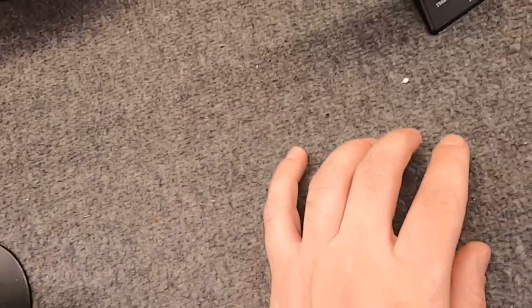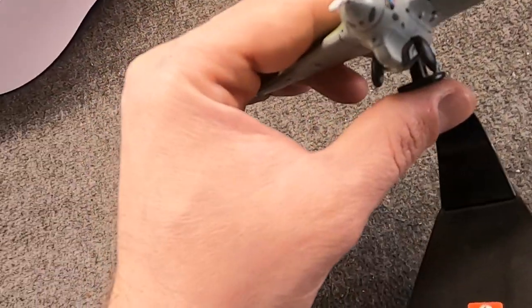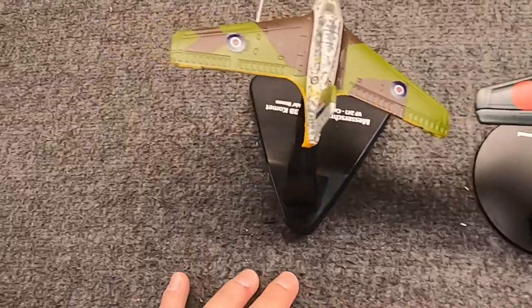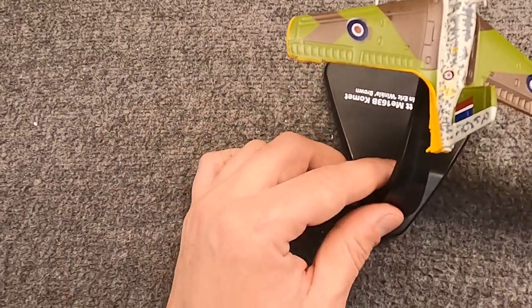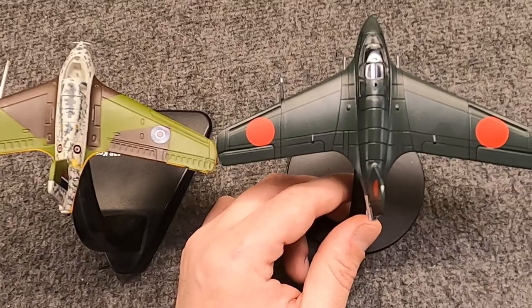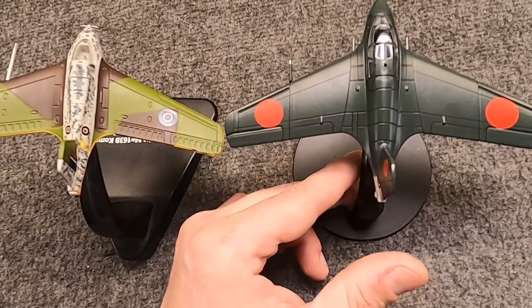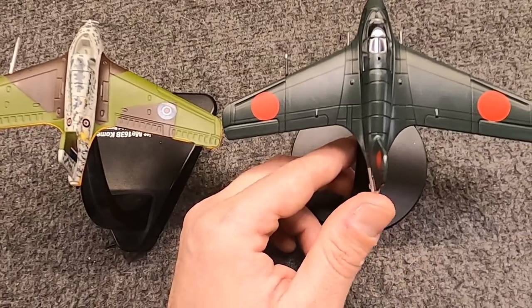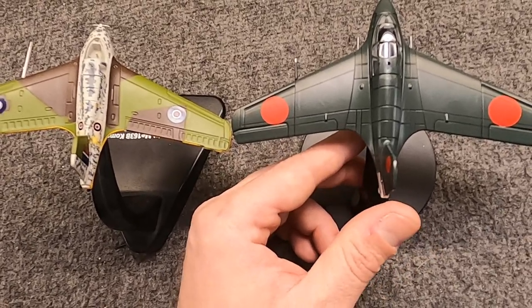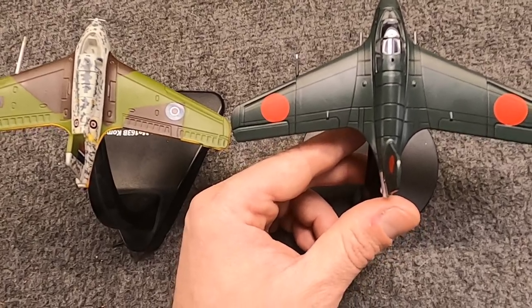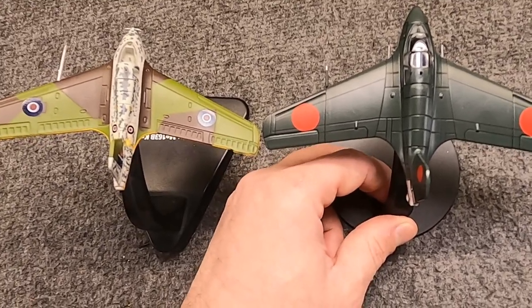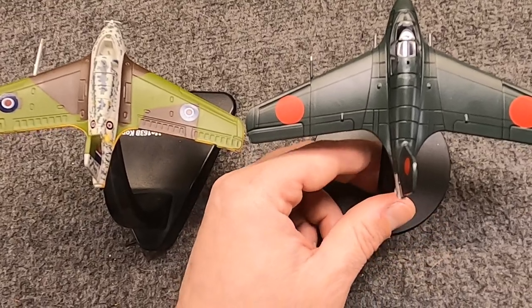It still used the undercarriage, the little ejectable dolly system. And the German version had two 30mm cannon with 60 rounds each. The Japanese version had two 30mm cannon as well, but 53 rounds each. Now, there would be two versions made. The J-8M-1 for the Navy that used the HO-105 naval cannon, which was, you know, a good kind of cannon.